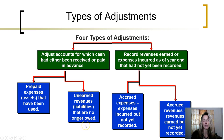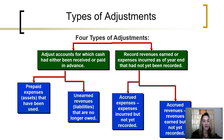The second type of adjustment is to look at unearned revenues — liabilities that we no longer owe. The third is to look at accrued expenses. Accrued is really just a fancy financial term to mean accumulated, so we're going to be looking for accumulated or accrued expenses that we haven't yet recorded. And finally, we will look for accrued revenues — revenues that have been earned but have not yet been recorded.